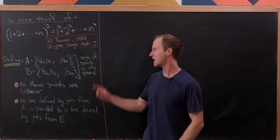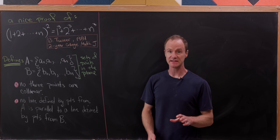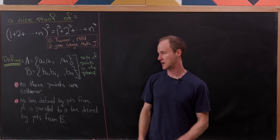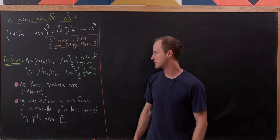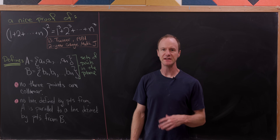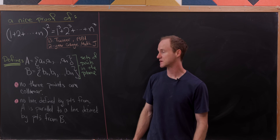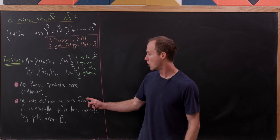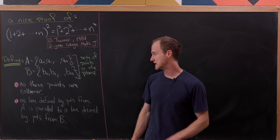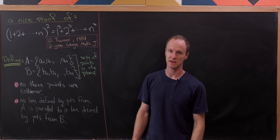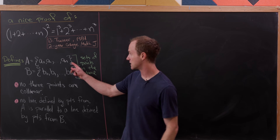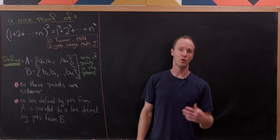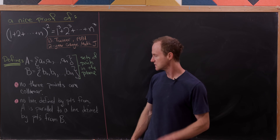For this proof we're going to need two sets, A and B. Each of these sets has n plus one points. I'll label the points in A as a₀, a₁, a₂, up to aₙ, and in B as b₀, b₁, b₂, up to bₙ. These points in the plane satisfy two conditions: first, no three points are collinear (general position), and second, no line defined by points in A is parallel to a line defined by points in B. This ensures every line from A intersects every line from B exactly once.